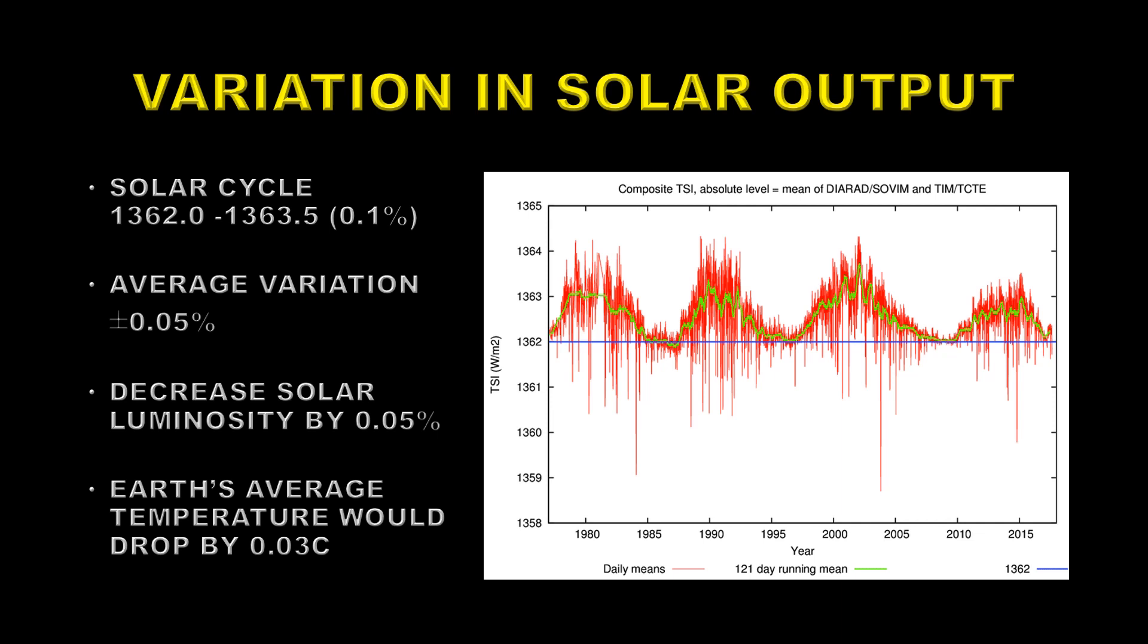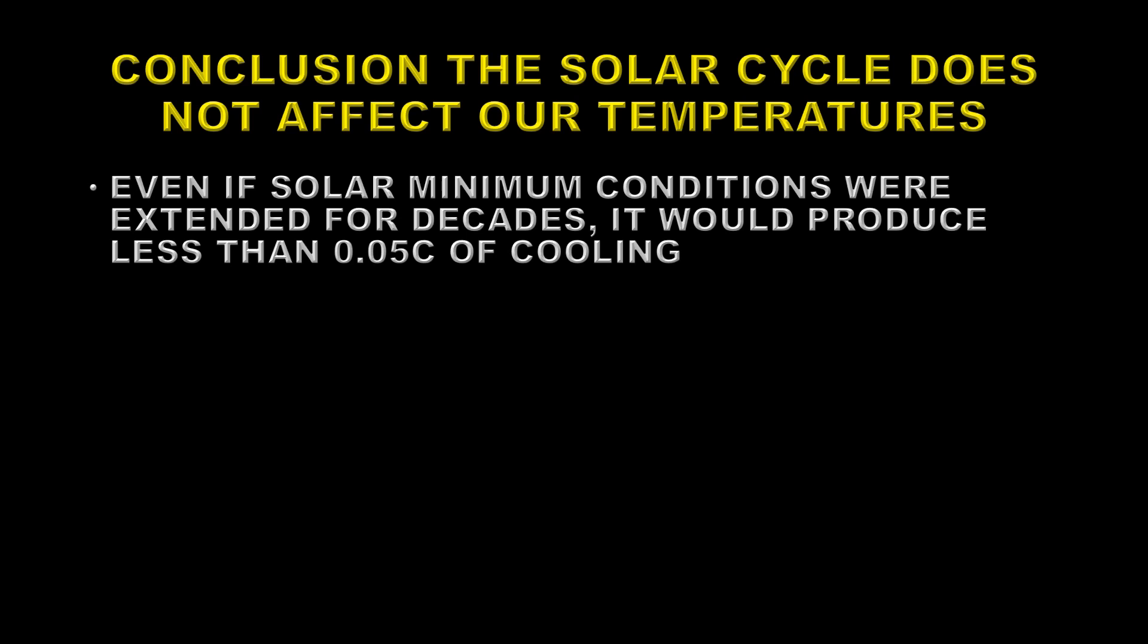So going into a grand solar minimum will make almost no difference even if it's for a very long period of time. So the conclusion is that solar cycles do not affect our temperature. Even an extended grand solar minimum would be a change of only 0.05 degrees centigrade or less.